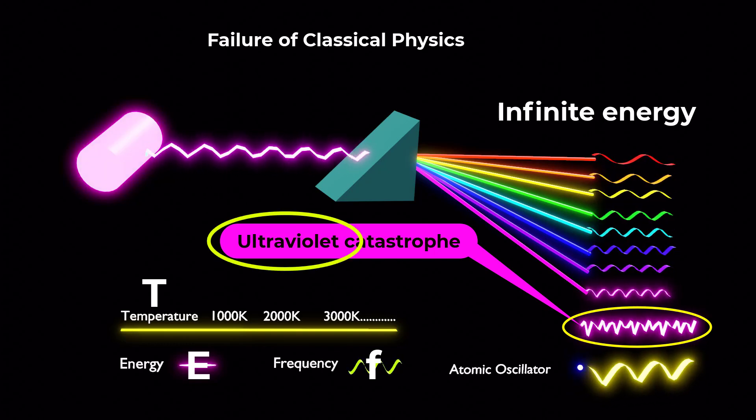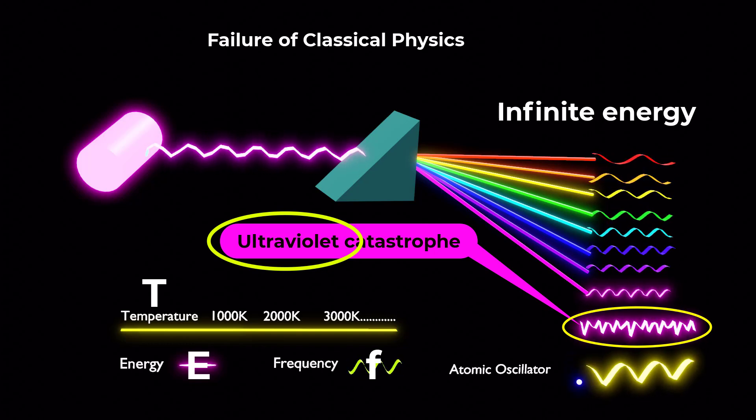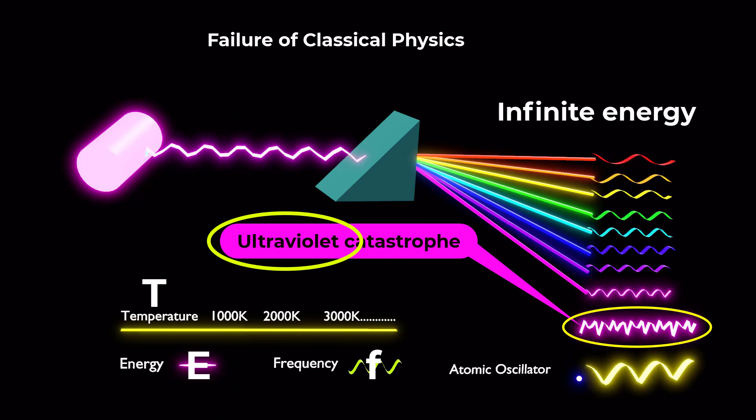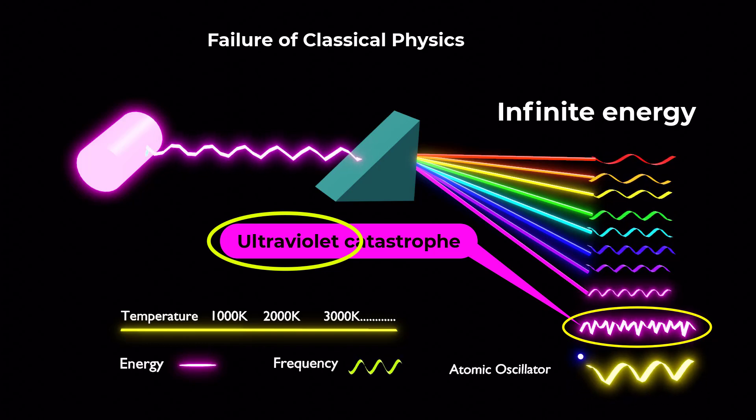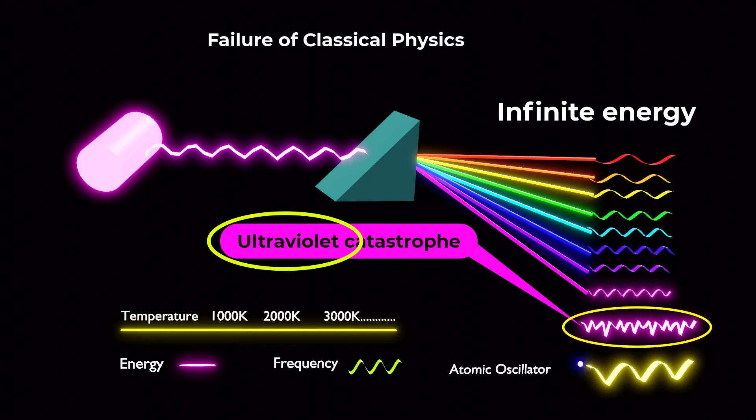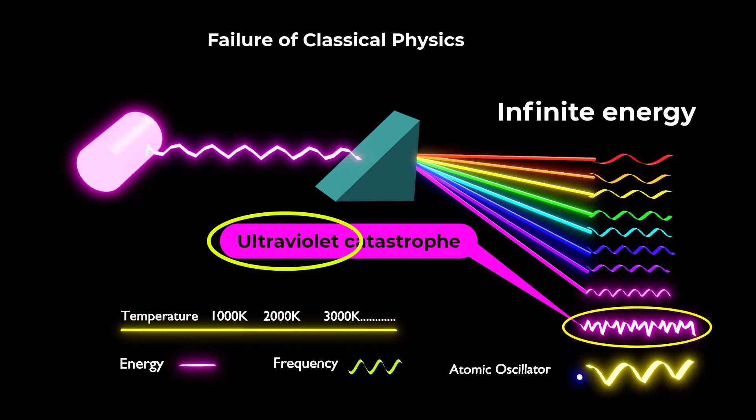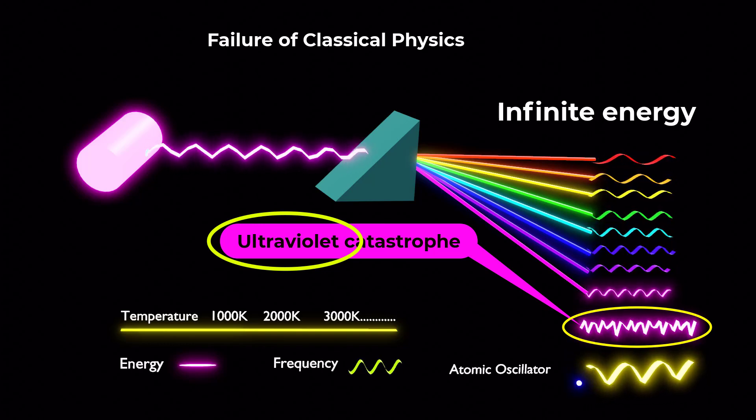The word ultraviolet refers to the fact that the problem appeared in the ultraviolet region of the electromagnetic spectrum. This failure of classical physics to fully explain black body radiation challenged the foundations of the field.